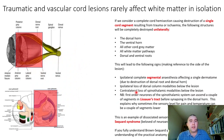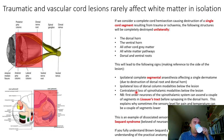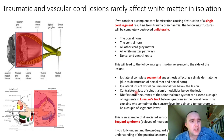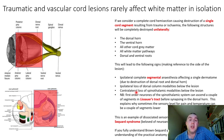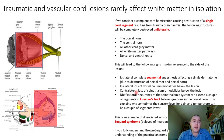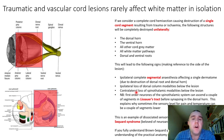Staying on the theme of lesions, let's think about the consequences of trauma and vascular lesions affecting the cord itself. When thinking about spinal cord lesions, we tend to emphasise the effect on the white matter and the long tracts, but we need to also remember that the grey matter can be damaged as well. Both can lead to a variety of consequences.